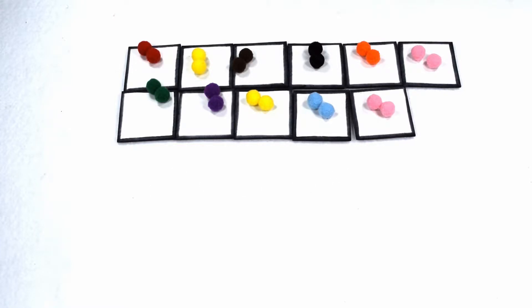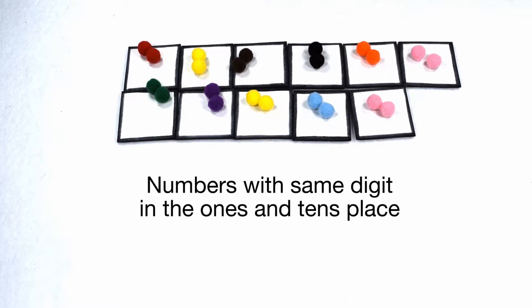Matter of fact, there's a pattern to all the numbers under 100 that are divisible by 11. If the value is divisible by 11, it will have the same digit in the ones and the tens place. So under 100, this would include 11, 22 as we see here, 33, 44, 55, 66, 77, 88, and 99.